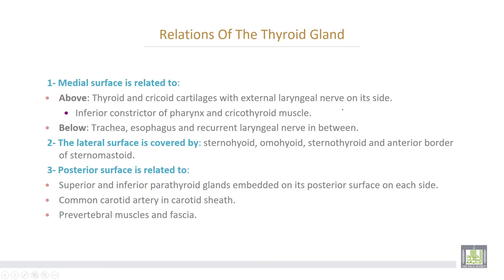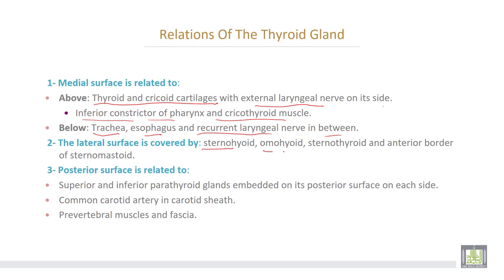Relations of the thyroid gland: the medial surface is related above to the thyroid and cricoid cartilage, with the external laryngeal nerve on its side, and the inferior constrictor of the pharynx and cricothyroid muscle. Below, it is related to the trachea, esophagus, and the recurrent laryngeal nerve in between. The lateral surface is covered by infrahyoid muscles — sternohyoid, omohyoid, sternothyroid — and the anterior border of the sternomastoid muscle.